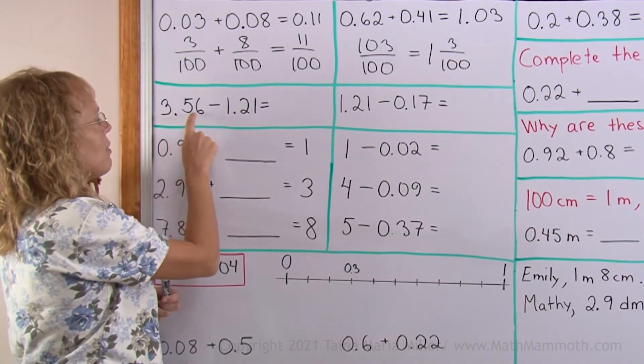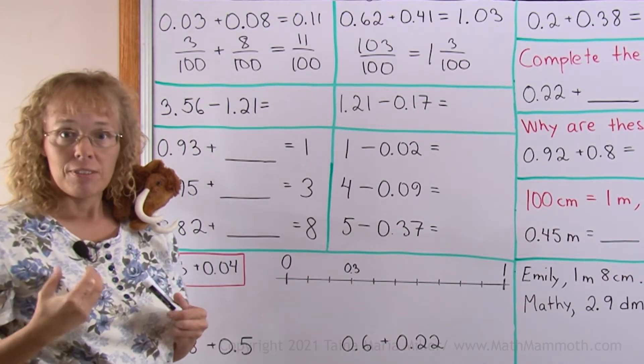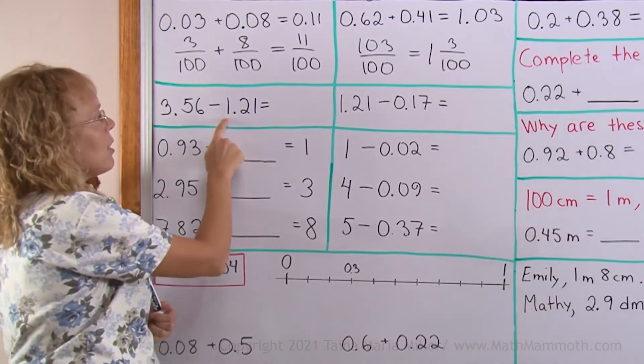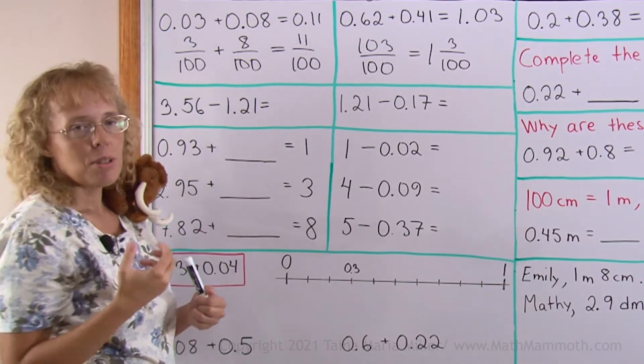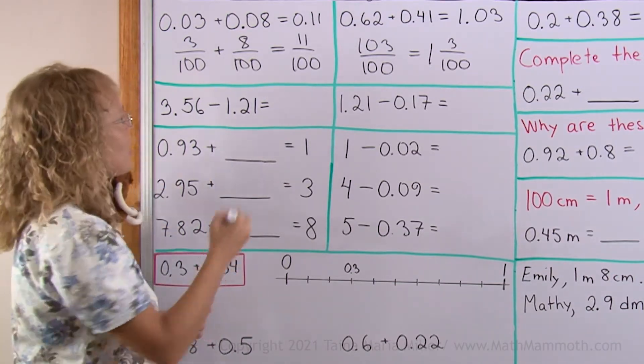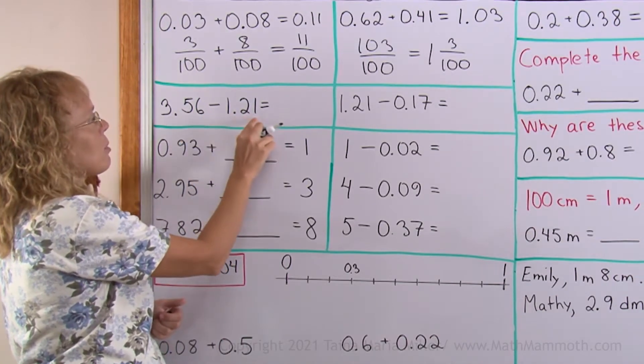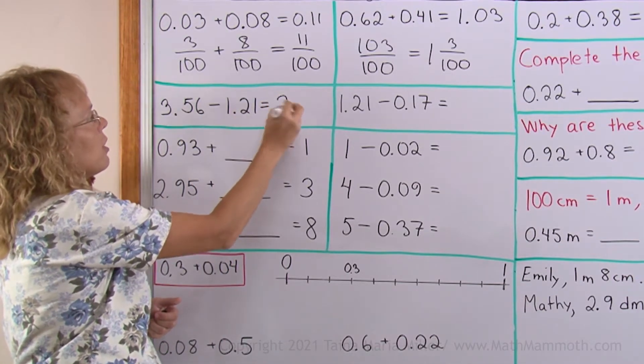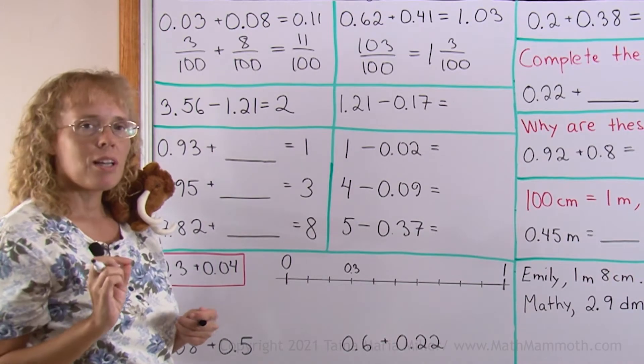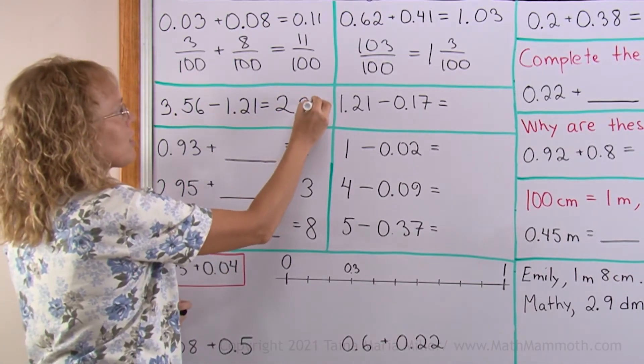Three point five six, or three and fifty-six hundredths take away one and twenty-one hundredths. We can subtract the whole number parts separately, and then the decimal parts separately, to get two here, and then fifty-six minus twenty-one is thirty-five, thirty-five hundredths.